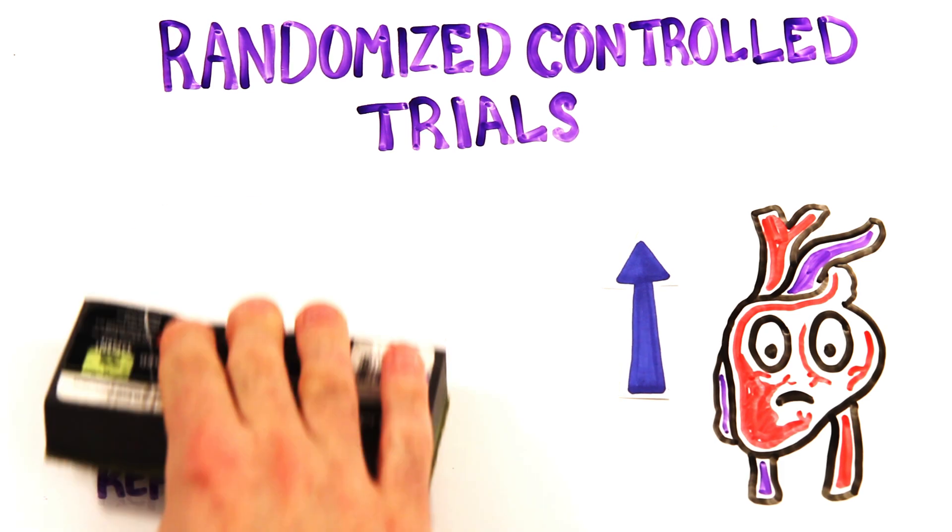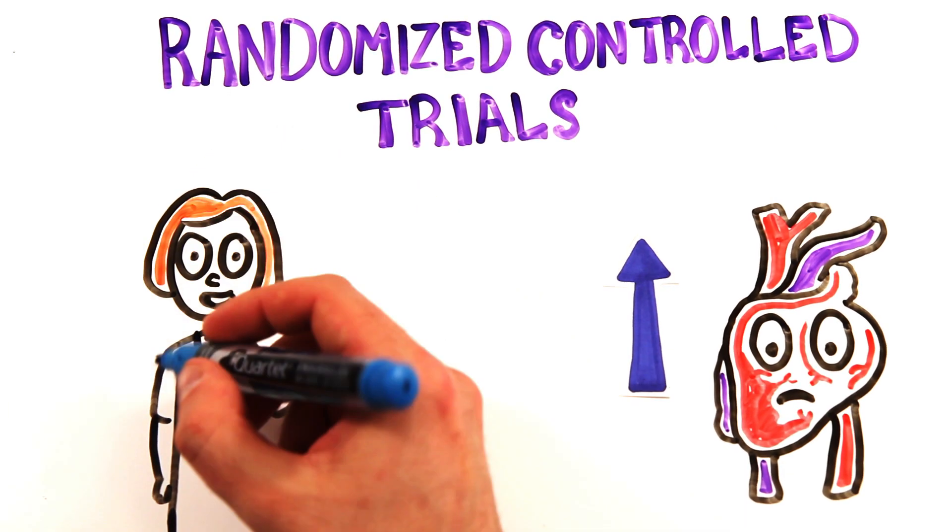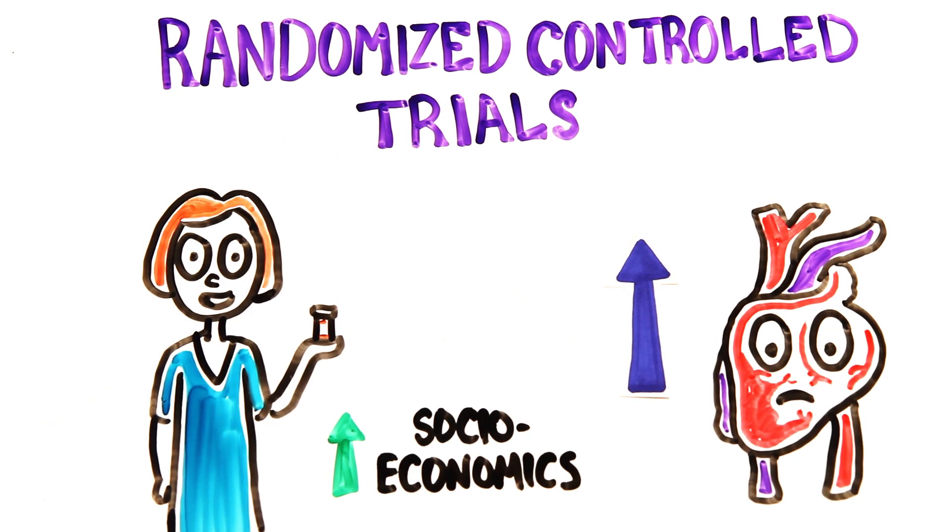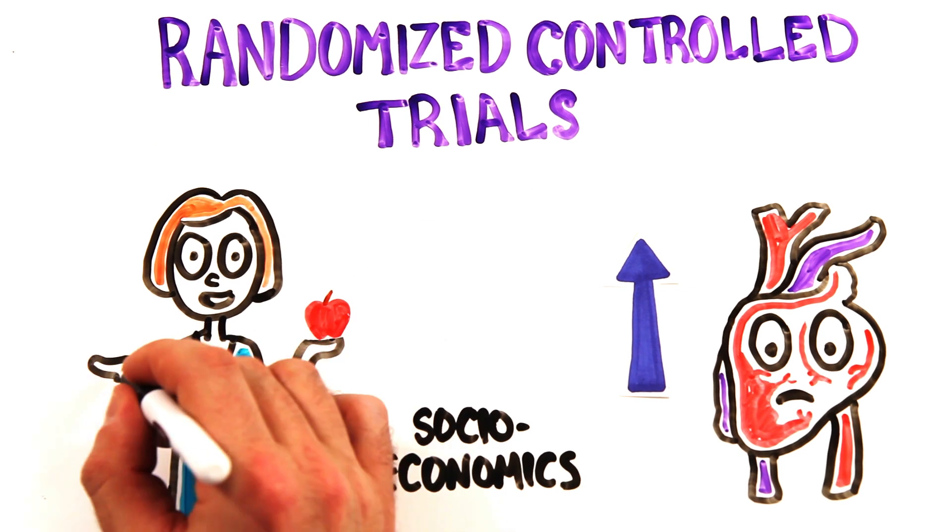When the original data was finally reanalyzed, it was found that women who took the therapy were of a higher socioeconomic group with a better diet and exercise regime. This was the real cause behind decreased risk of heart disease.